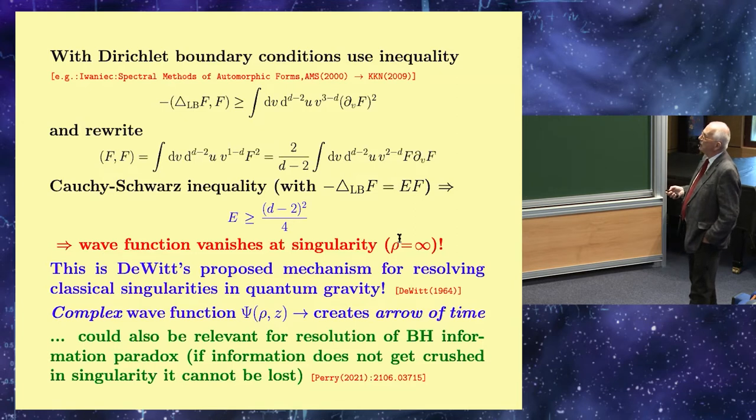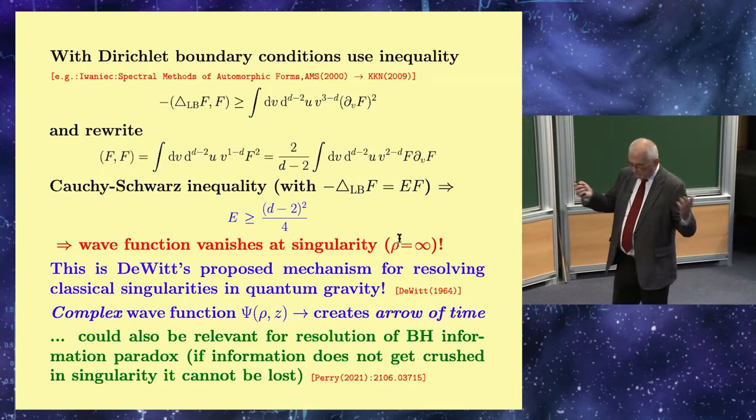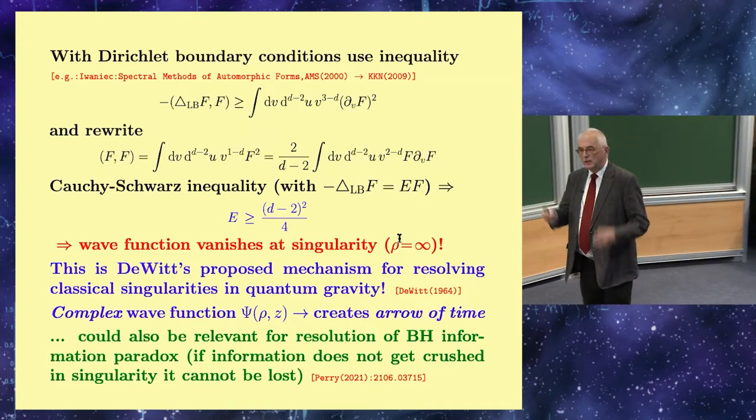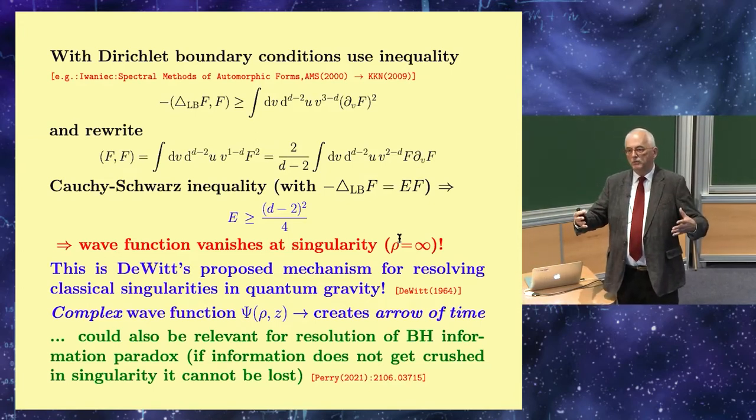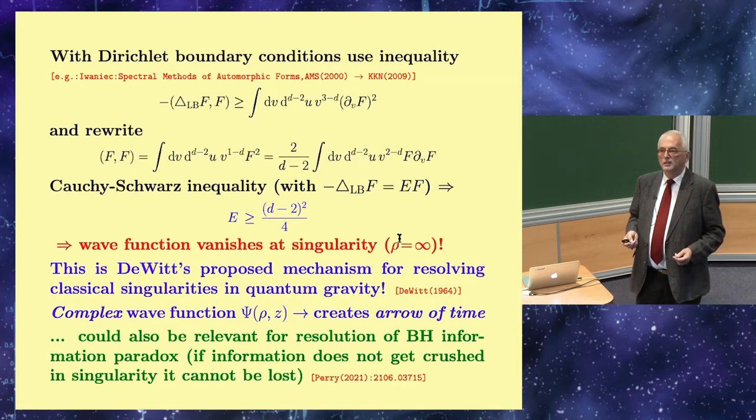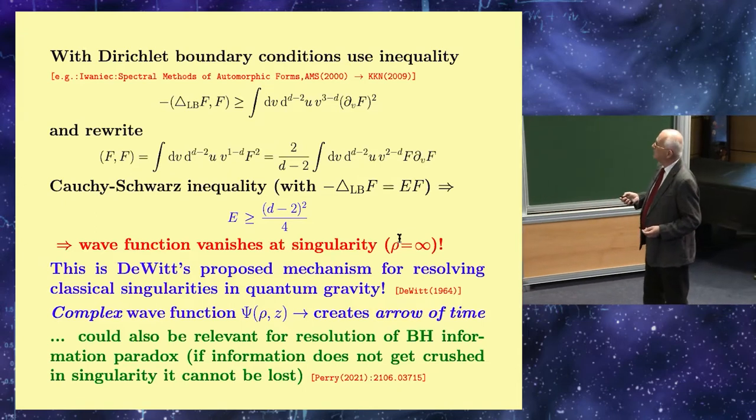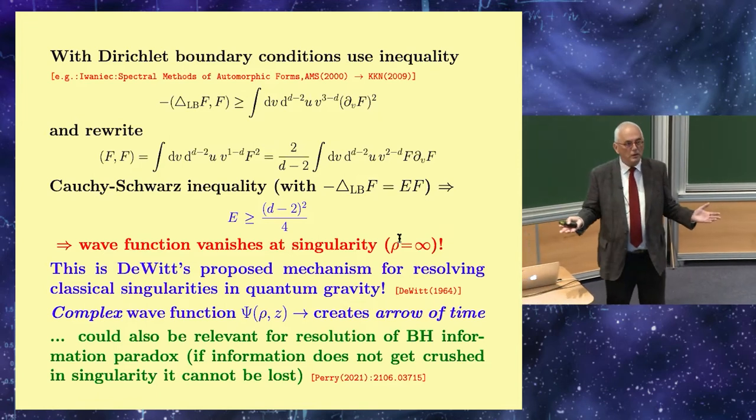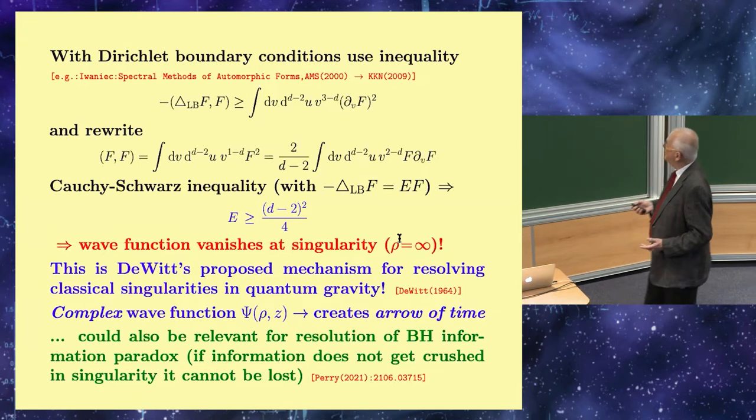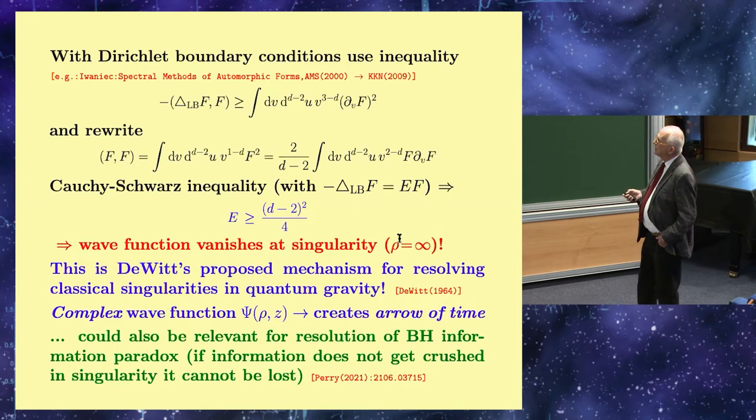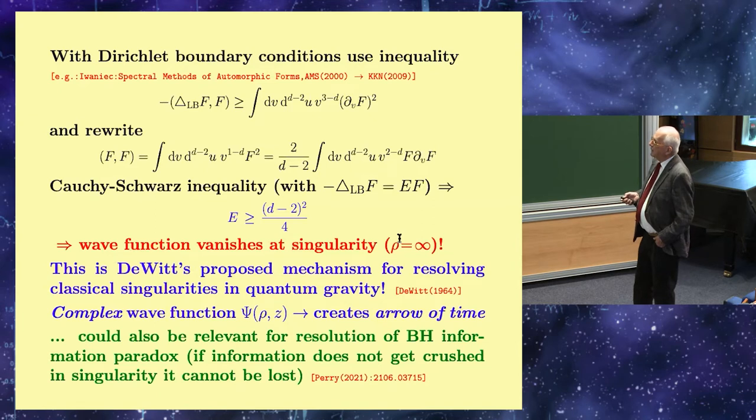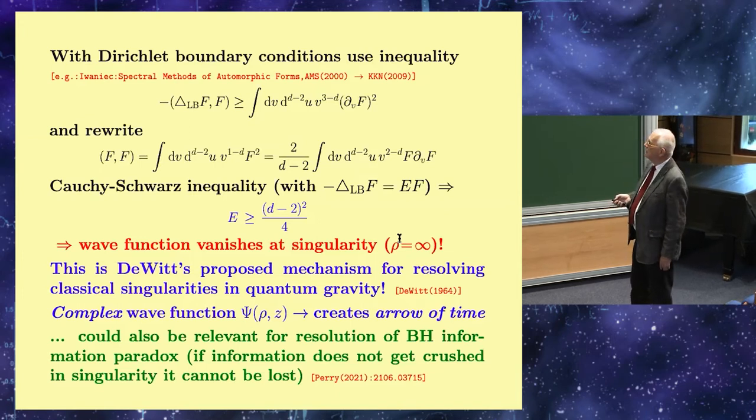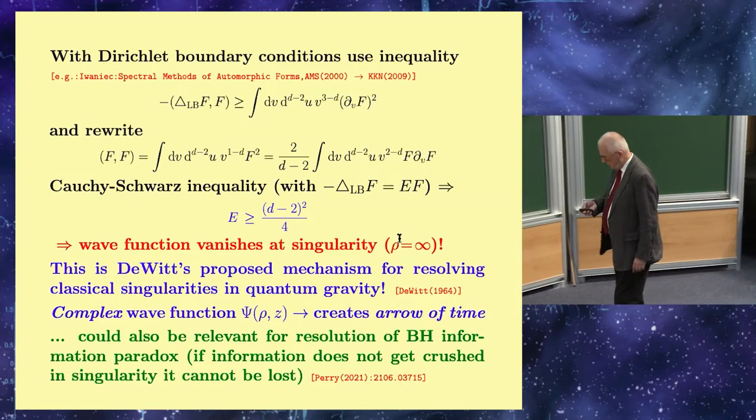The universal behavior goes to zero and oscillates an infinite number of times as you go toward the singularity. This means that generically in this approach, the wave function vanishes at the singularity. There are already three physically important things you can deduce from that. First, this is DeWitt's original proposed mechanism for resolving classical singularities in quantum gravity. Furthermore, you're forced to a complex wave function, which creates an arrow of time. Finally, this could be relevant for the resolution of the black hole information paradox. This is a recent paper of Malcolm Perry.